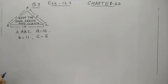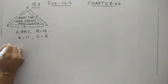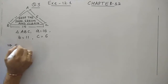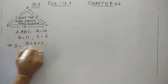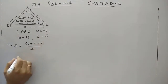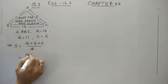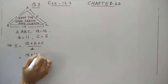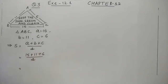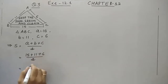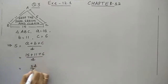To apply Heron's formula, first we will find out the semi-perimeter S, that is A plus B plus C divided by 2. When you do the sum of all these sides, 6 plus 6 gives 12, so it is 32 divided by 2. So the semi-perimeter is 16 meters.